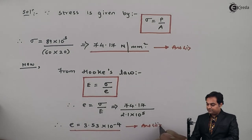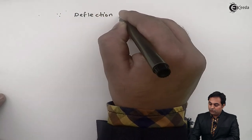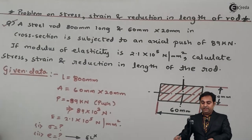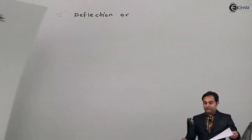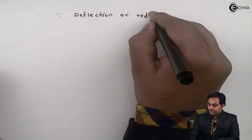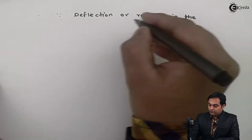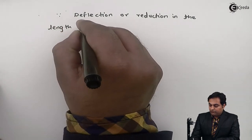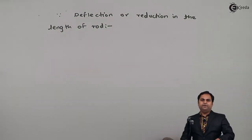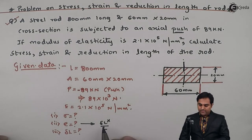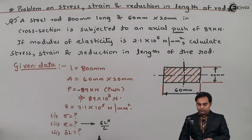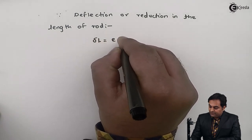The last question is to calculate deflection. Since the load is a push type, the deflection is a reduction in the length of the rod. That reduction can be calculated using the concept of strain, since strain = deflection / original length. Therefore, deflection = strain × original length.